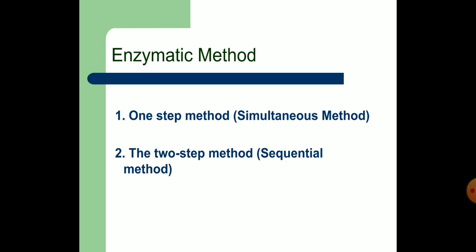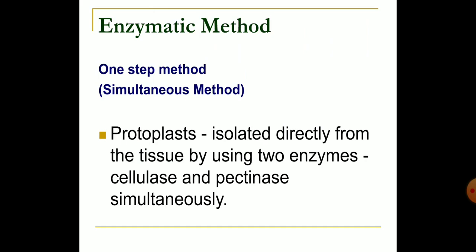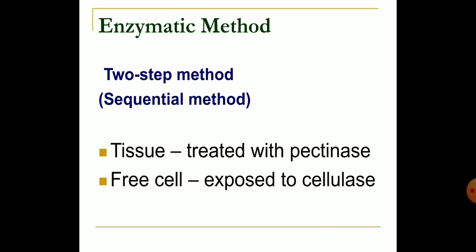The enzymatic method can be used as a one-step method or as a two-step method. In the one-step method, protoplasts are isolated directly from the tissue using two enzymes, cellulase and pectinase, simultaneously. In the two-step method, the tissue is first treated with pectinase to separate cells by degrading the middle lamella; these free cells are then exposed to cellulase to release protoplasts. Pectinase breaks up cell aggregates into individual cells, while cellulase removes the cell wall proper.